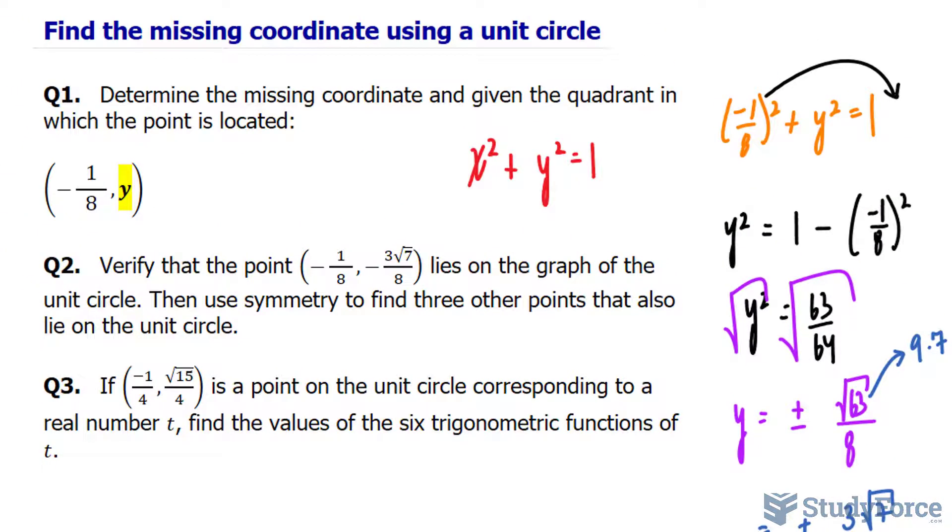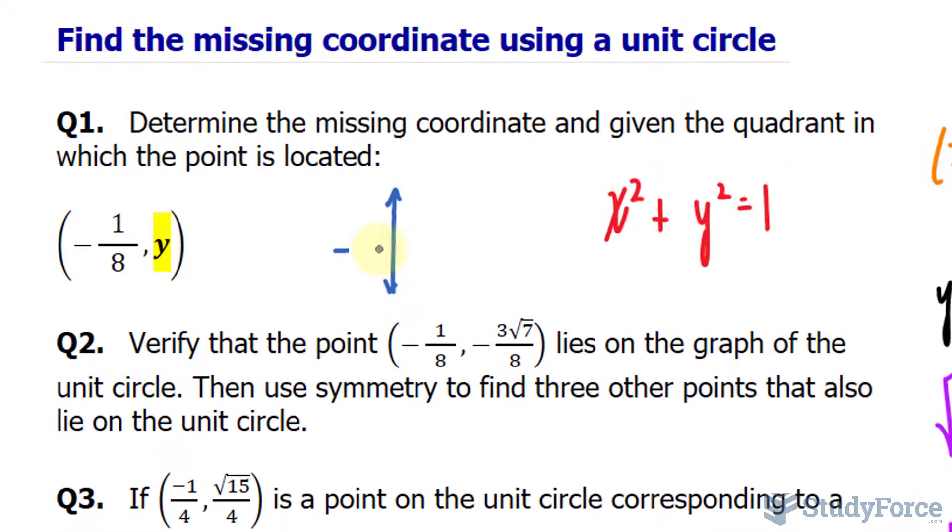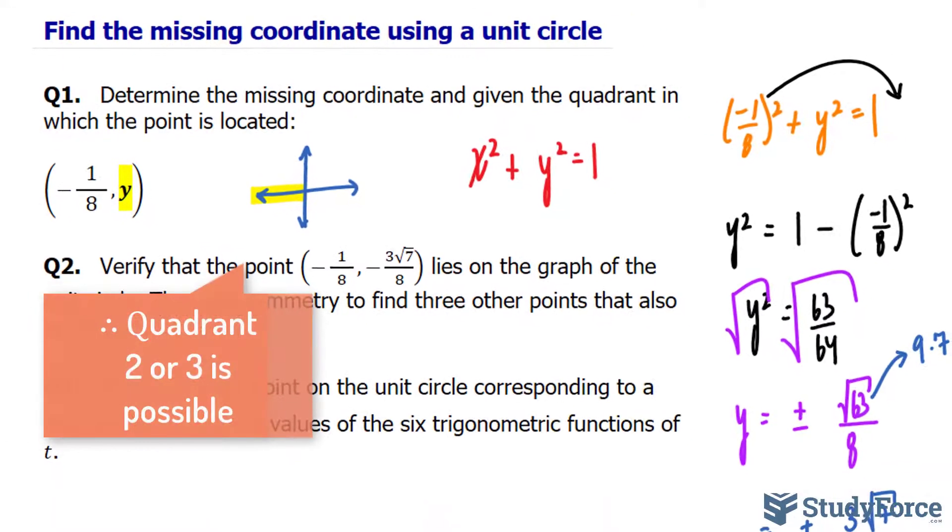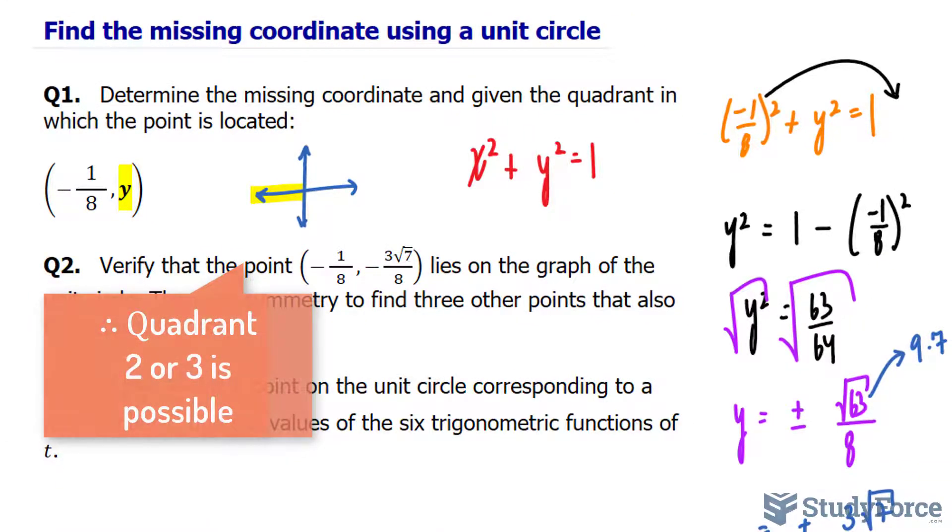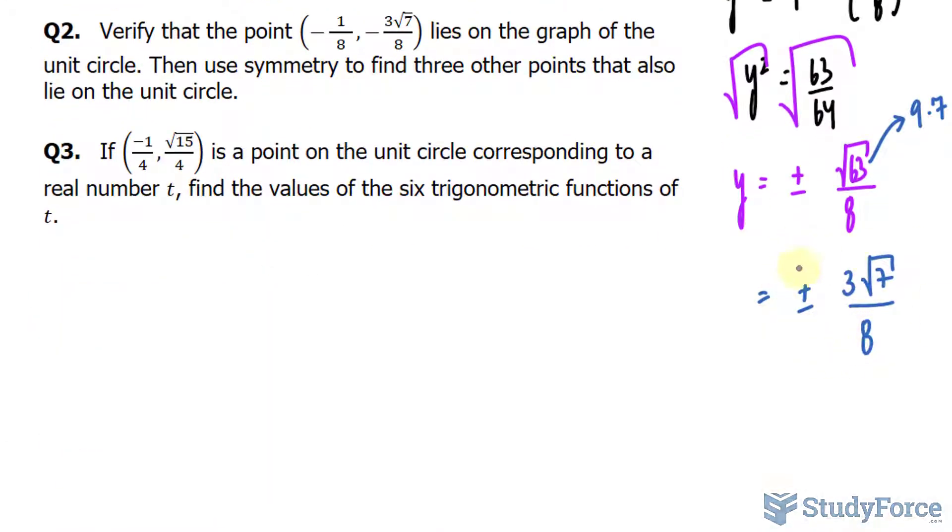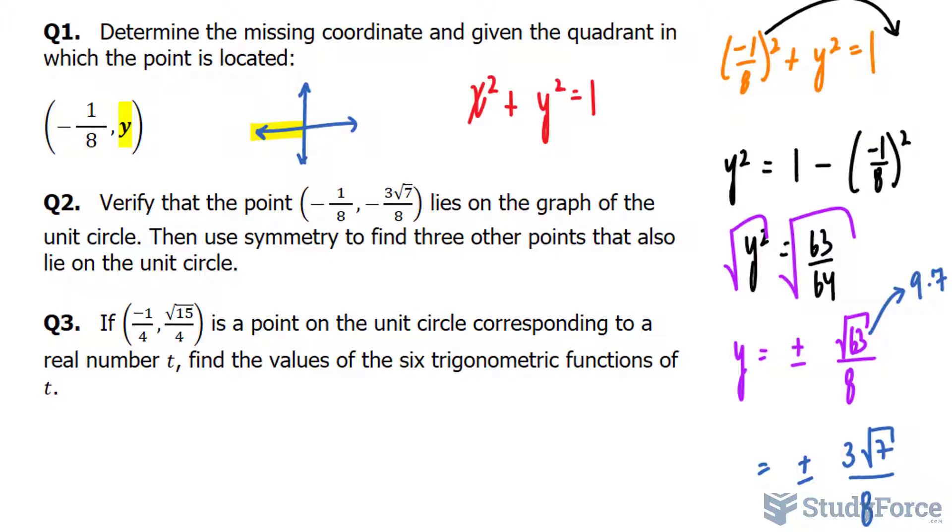Now think about this for a moment. Our x-coordinate is negative 1 over 8. So if we take a look at an xy-plane, the negatives occur this way. This means that the y-coordinate can either be positive or negative, so we can accept both the positive and negative version as possible y-coordinates when the x-coordinate is negative 1 over 8.